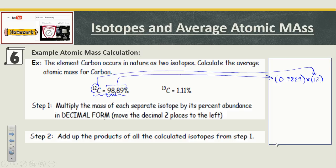And then I have to add the product of that multiplication to the second isotope. This decimal I have to move as well. I have to put a zero in the placeholder. So, 0.0111 times the atomic mass of that isotope, which in this case is 13.